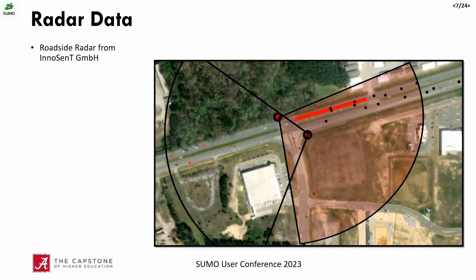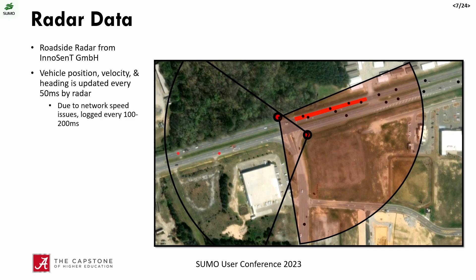Moving on to the radar data: we have roadside radar from Innovint. Our overall network is larger than what's shown here — we're looking at one traffic light with two radars indicated by half circles. The radar used for this work is the red-shaded one. These radars record vehicle velocity, position, heading, and other statistics every 50 milliseconds; however, due to network speed restrictions, we get data every 100 to 200 milliseconds for this work.